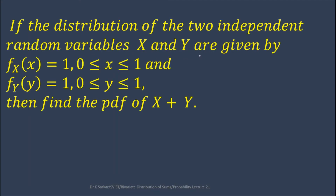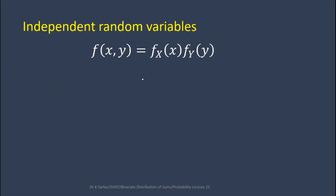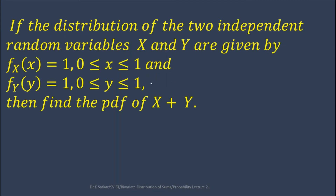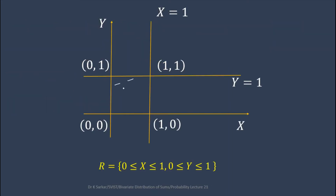Using the definition of independent random variables, f(x, y) equals f_X(x) times f_Y(y). In this case f_X(x) equals 1 and f_Y(y) equals 1, so f(x, y) equals 1. The region is 0 ≤ x ≤ 1 and 0 ≤ y ≤ 1. Let us see this region in the diagram.